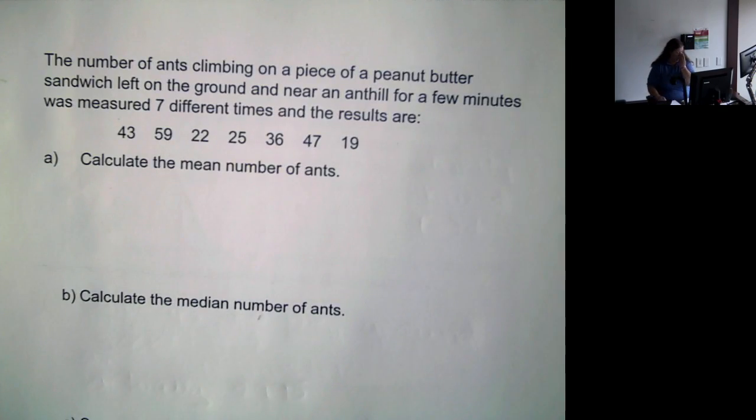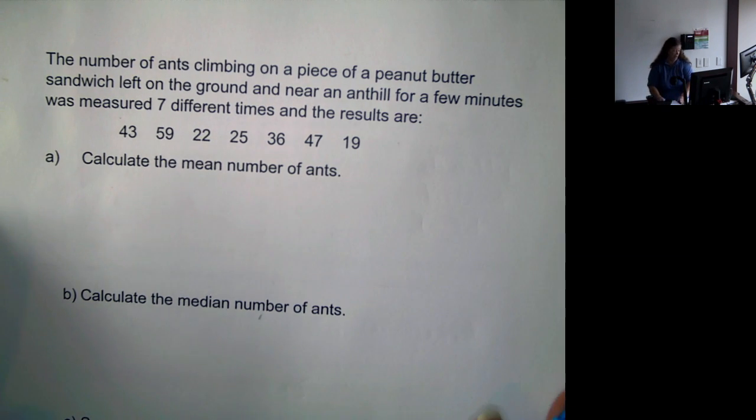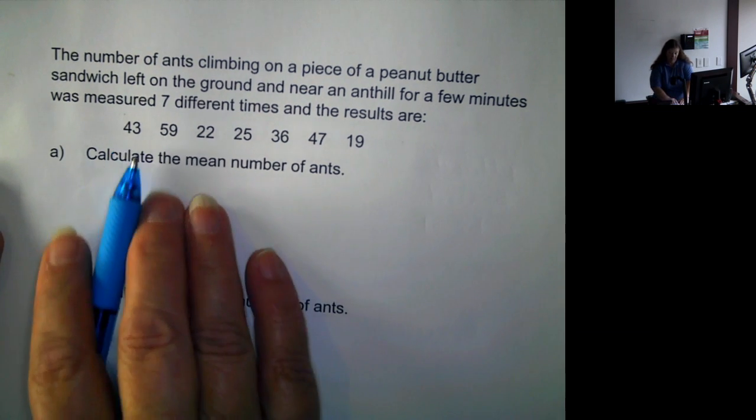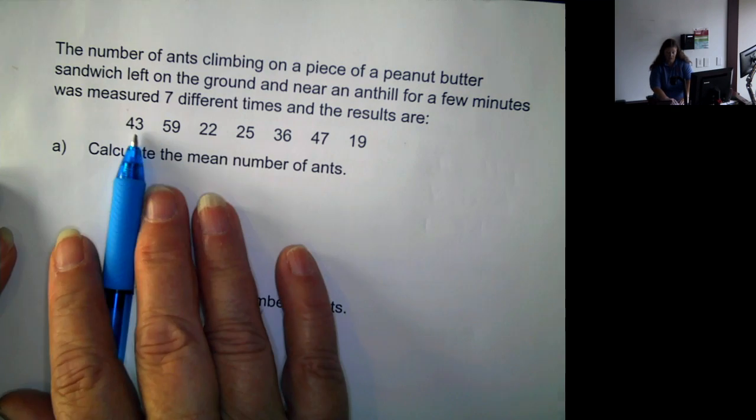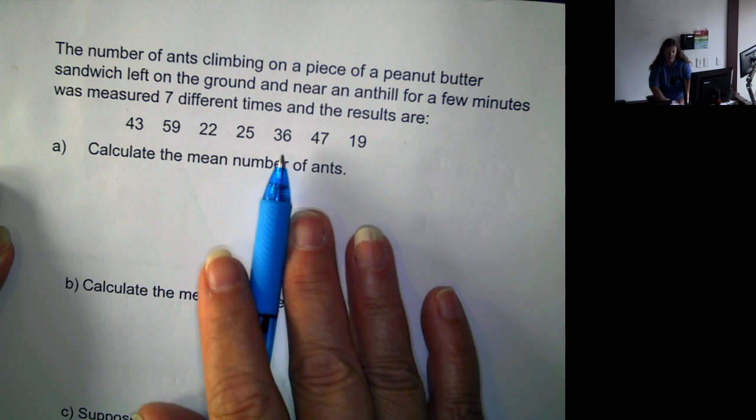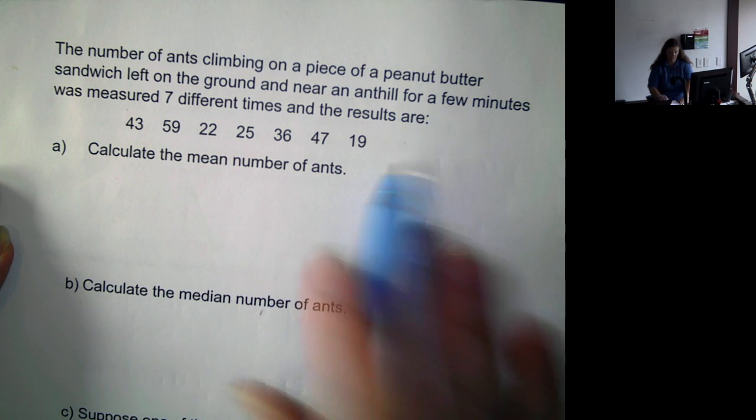Now, if we look at this work, we have someone counted the number of ants climbing on a piece of peanut butter sandwich that was left on the ground near an anthill. And it was measured seven different times, and these are the results. One time there was 43, 59, 22, 25, 36, 47, or 19.